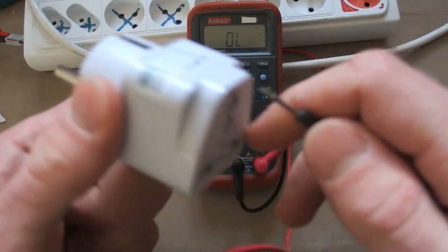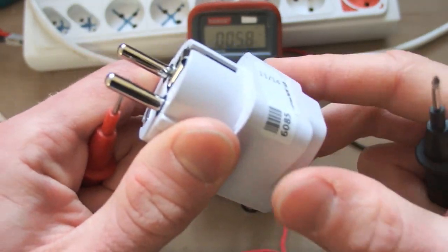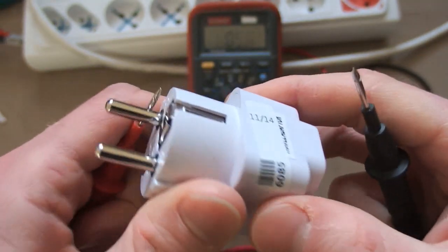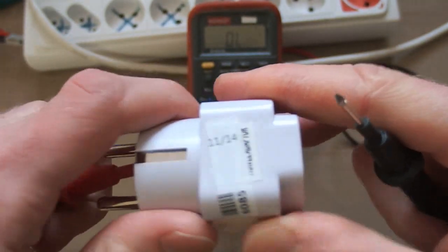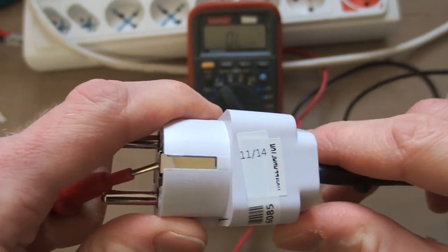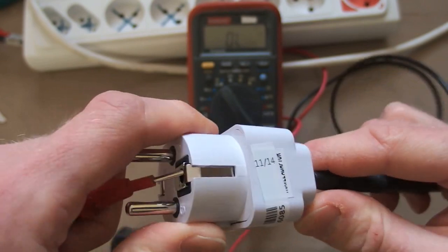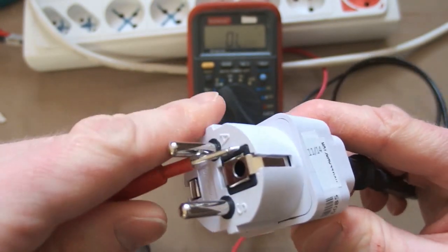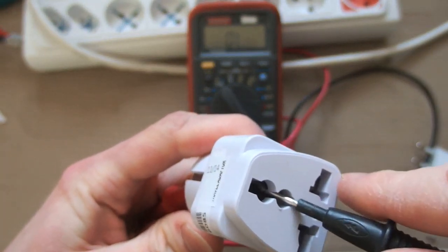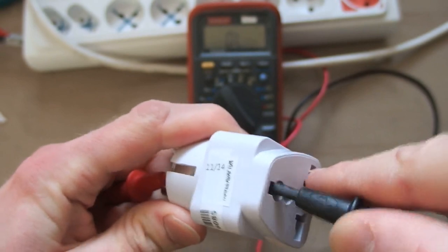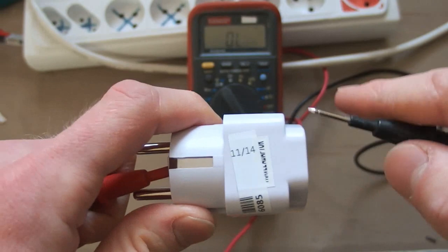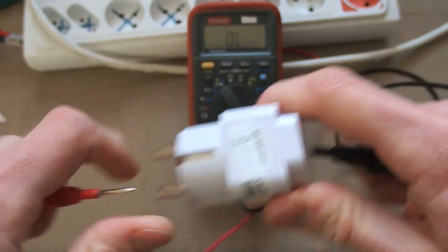So let's check the continuity. The live is okay. The neutral is okay. And the ground... What? It's not connected inside. I can't believe this. The ground contact here is not connected with the ground contact inside. There is no connection. It's crazy. Is it by design or is it just this one is wrong?